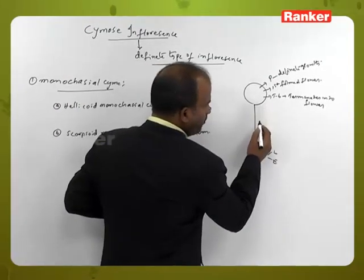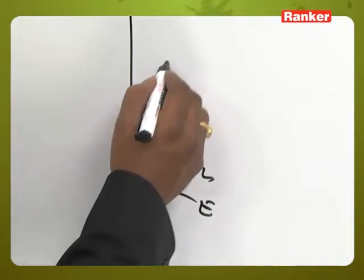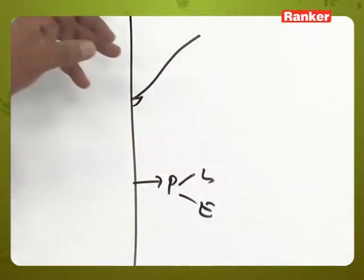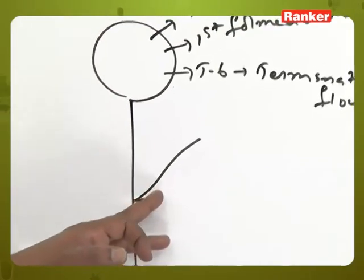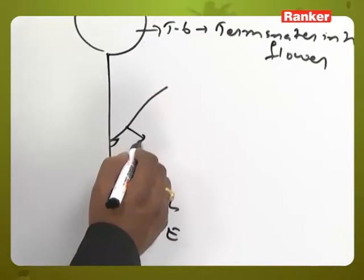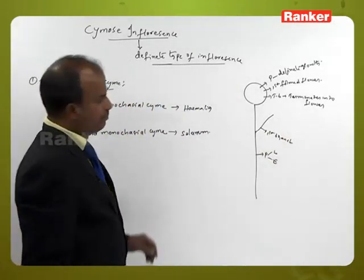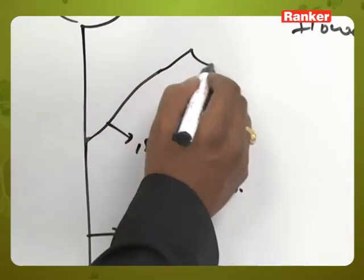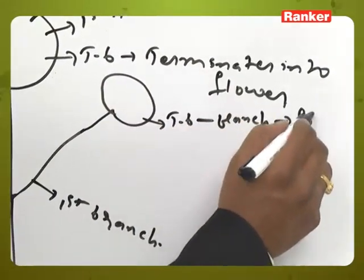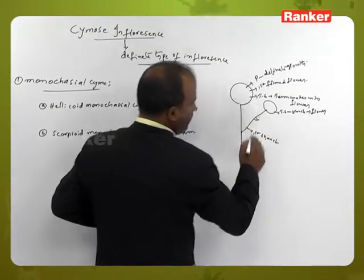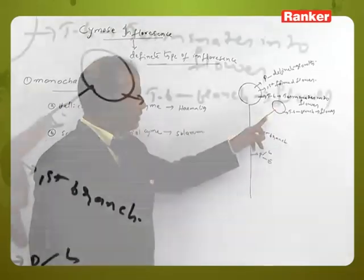Below the first formed older flower, the first branch arises. This is called the first branch. This branch also shows definite growth because the terminal bud of the branch also terminates into flower.